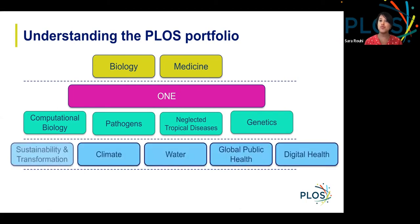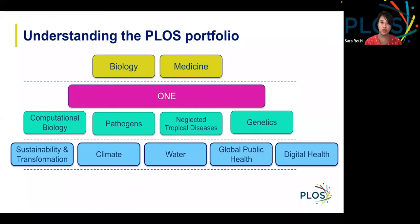Most recently, in 2022, we've launched five new titles — the first new titles in over a decade — focusing on critical areas aligned with the sustainable development goals from the UN, in journal areas of sustainability and transformation: PLOS Climate, PLOS Water, PLOS Global Public Health, and PLOS Digital Health.